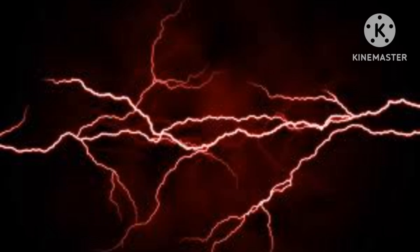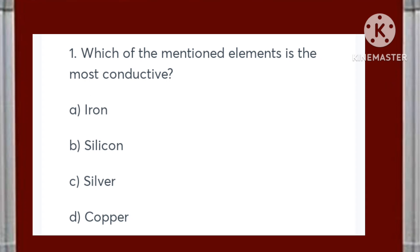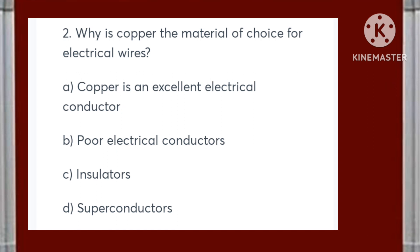Which of the mentioned elements is the most conductive: iron, silicon, silver, or copper? Answer is silver. Why is copper the material of choice for electrical wires? Options are: copper is an excellent electrical conductor, poor electrical conductor, insulators, or superconductors. Answer is A — copper is an excellent electrical conductor.